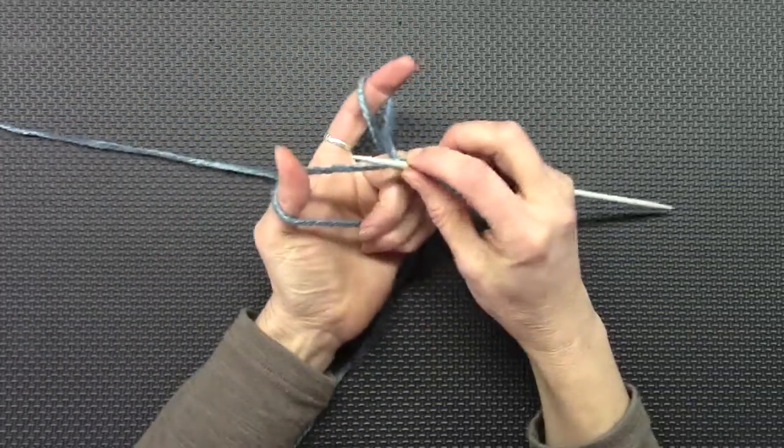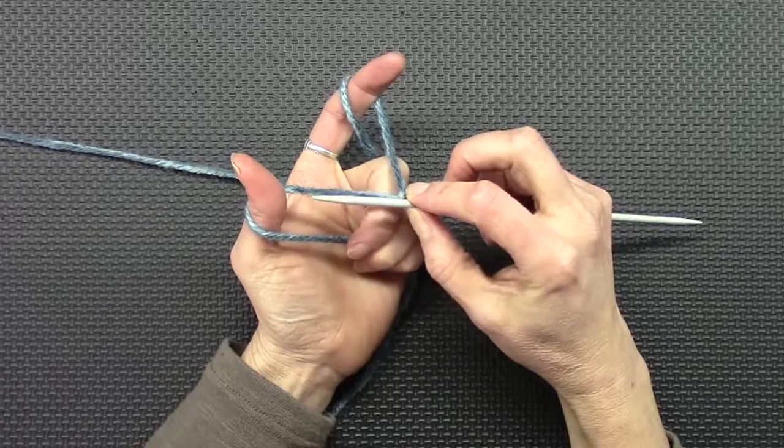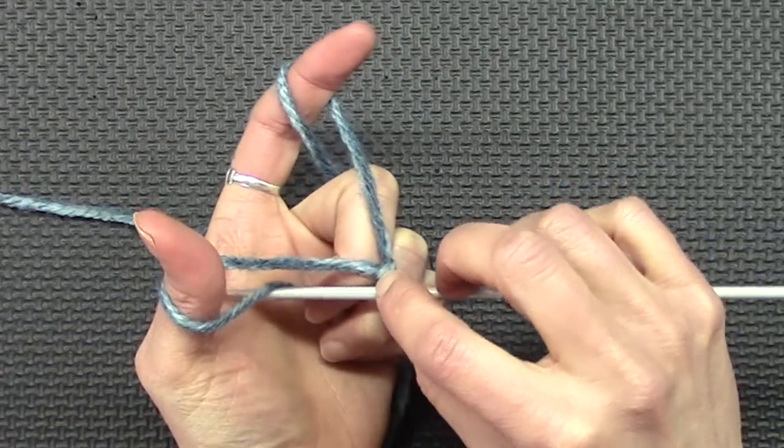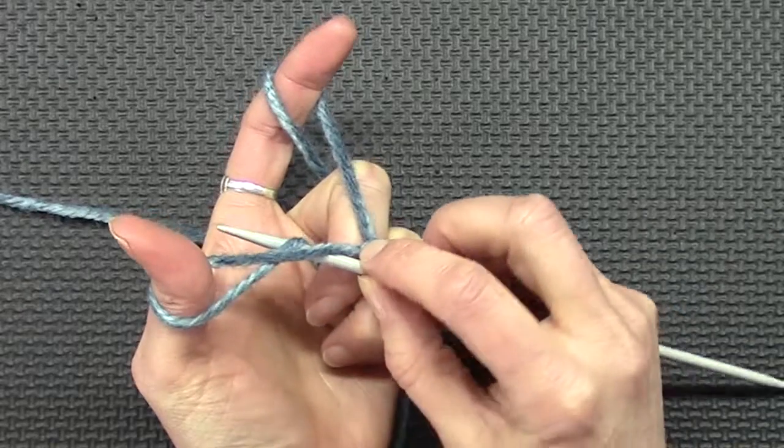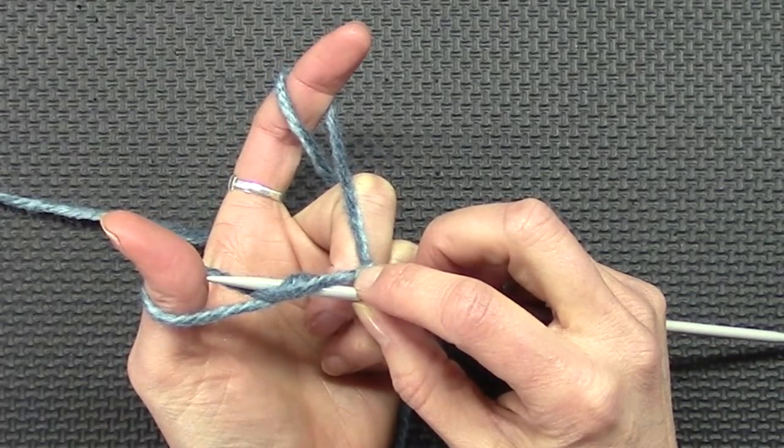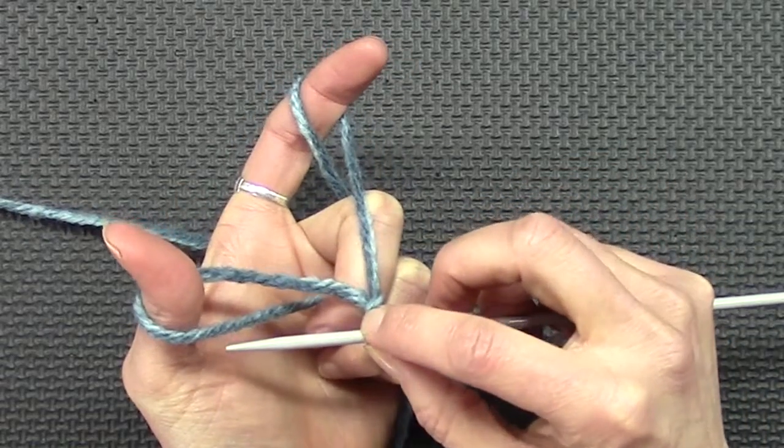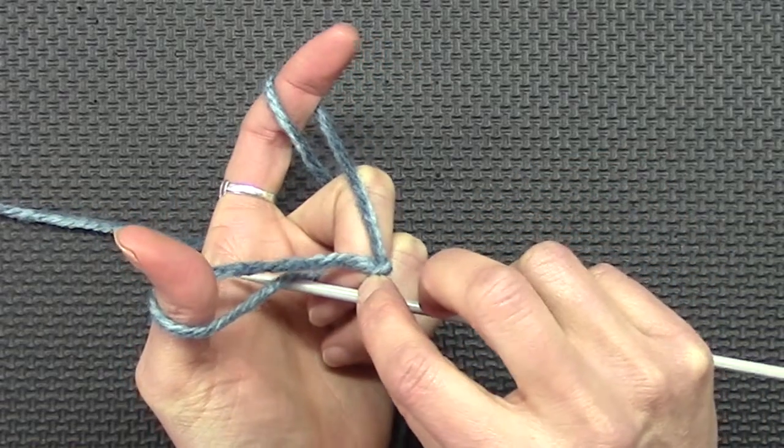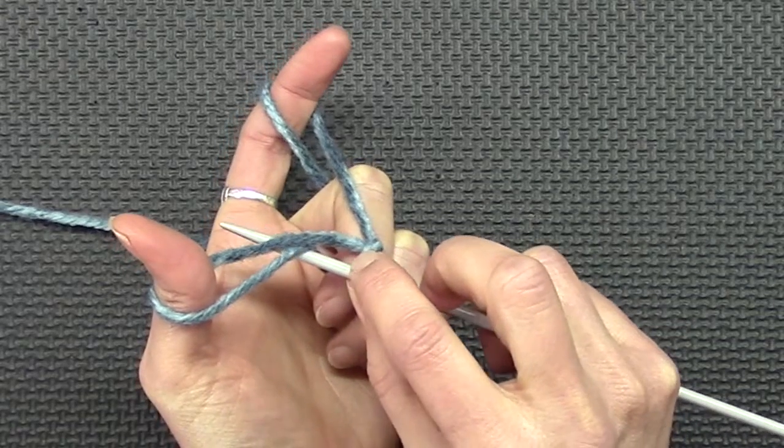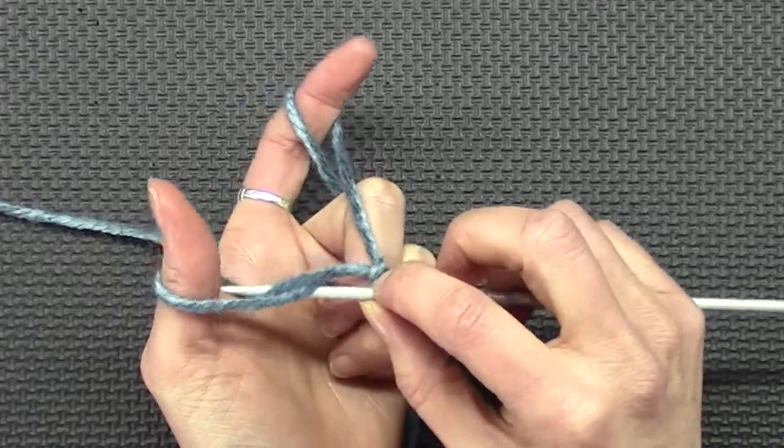So this one, what you're going to do is take your needle and go under the bottom, but go all the way around both yarns that are around your thumb. Try that again. So you go under that bottom thread and around both yarns that are around your thumb.